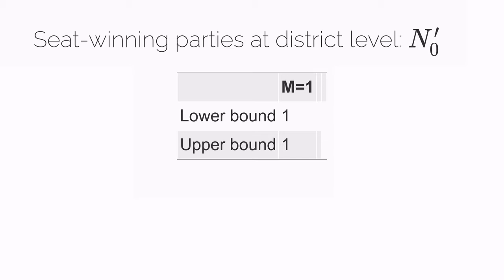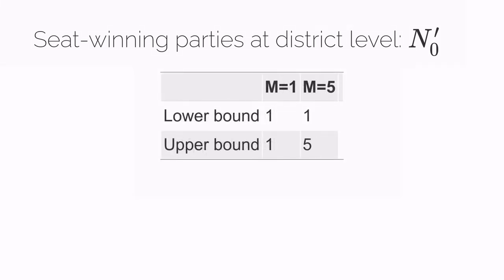If our district magnitude is five, then the smallest number of parties that can win a seat, or the lower bound as I call it here, is still one. This happens when one party wins all five seats. The largest number of parties that can win a seat, or the upper bound, is five. This happens when five different parties each win one seat.